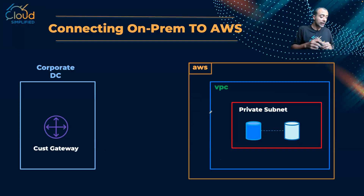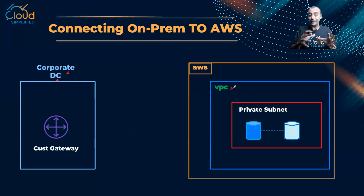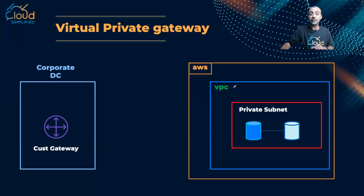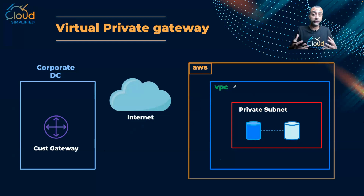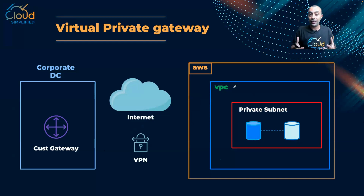The first option is connecting my corporate data center to my VPC — my virtual data center inside the AWS cloud. This connection is going to be over the internet, and as we all know, the internet is not a secure medium. So how can I send very sensitive data over the internet? The answer is definitely a VPN — a secure communication over a non-secured environment like the internet.